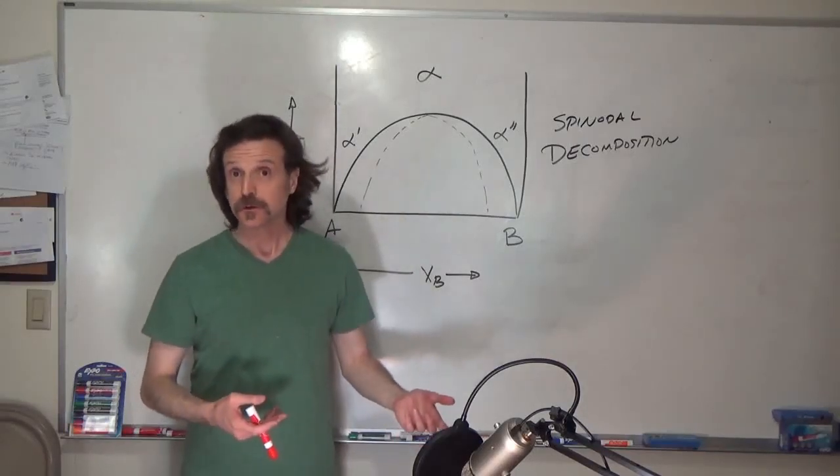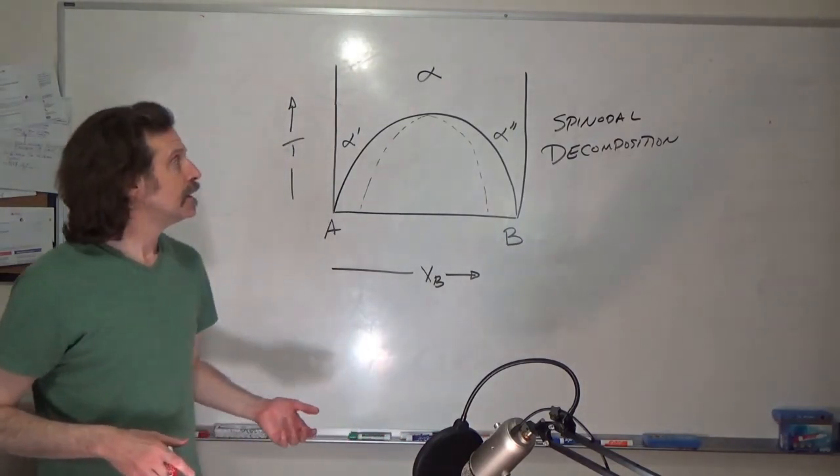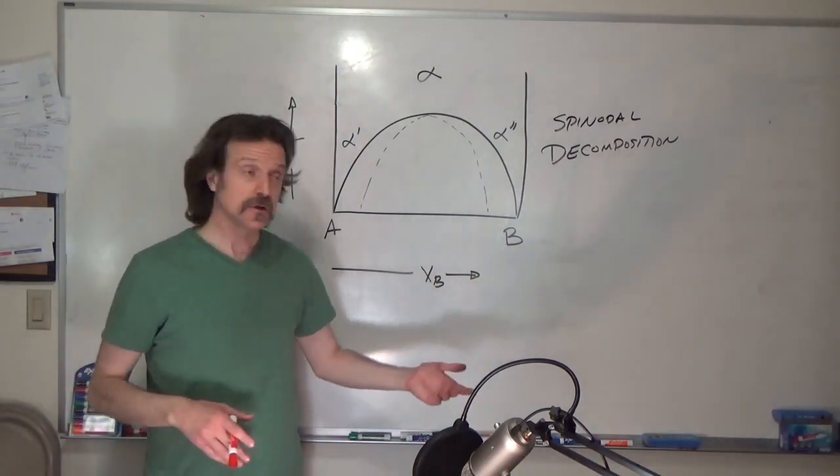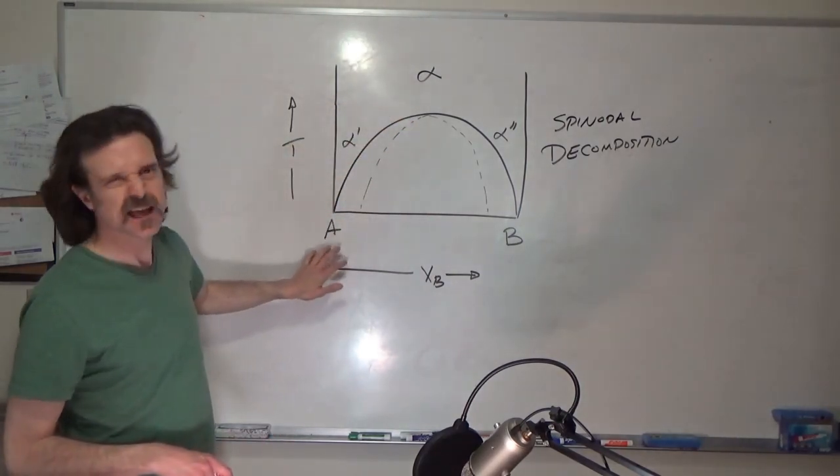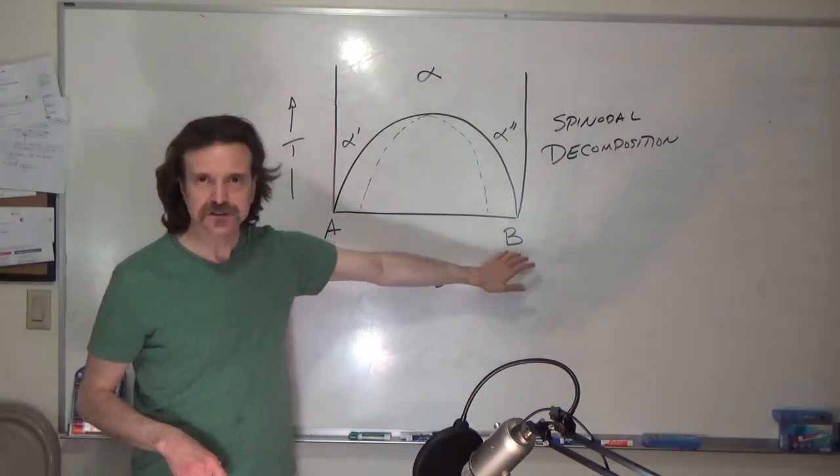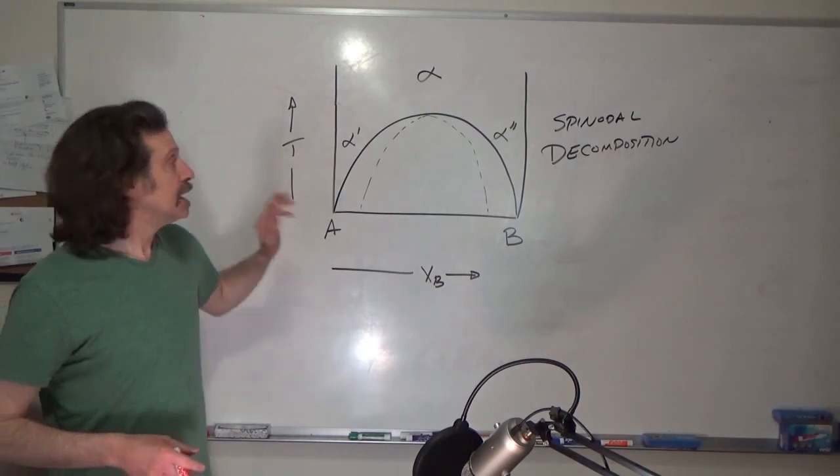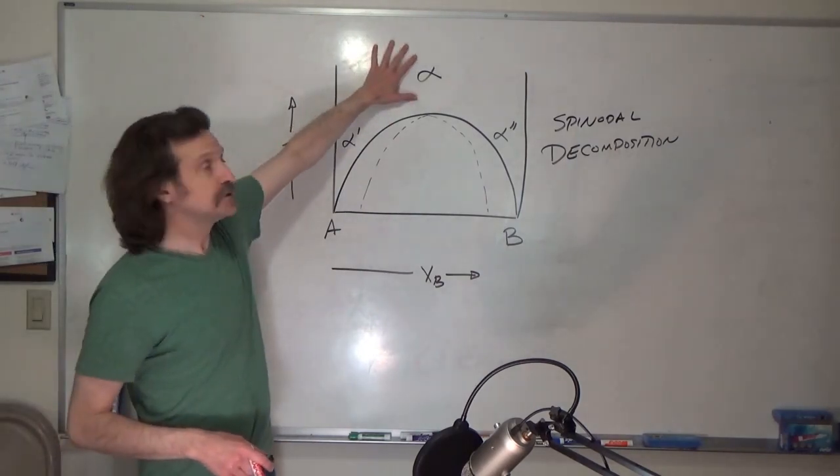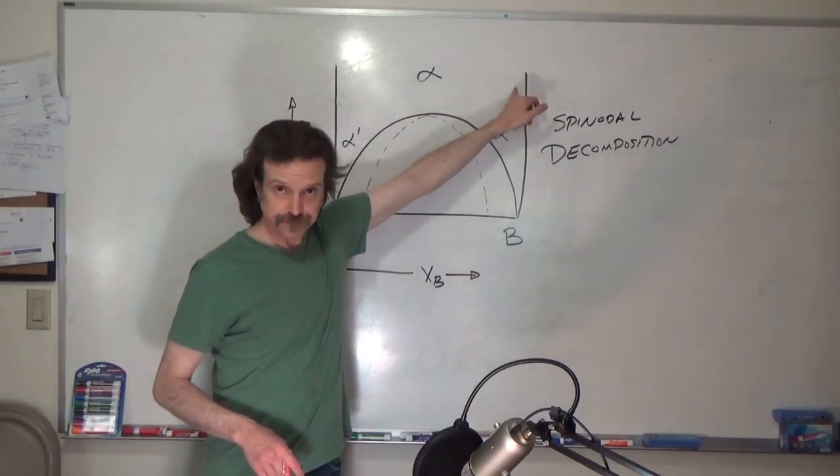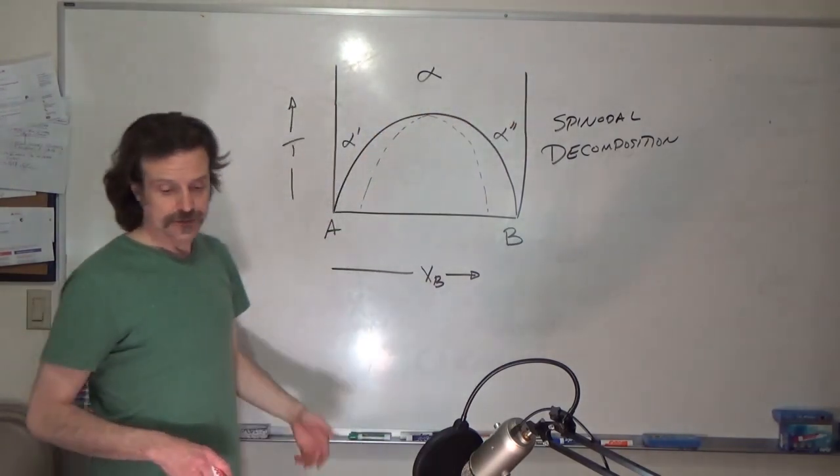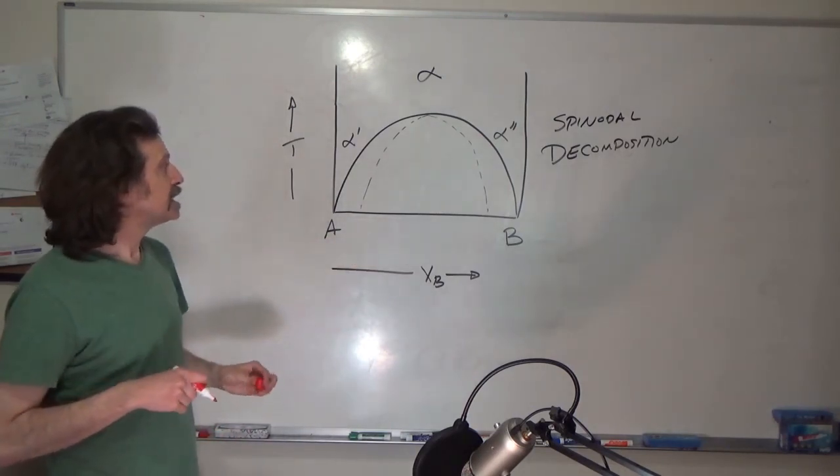I'd like to talk about spinodal decomposition. This is a situation in which—in this diagram I drew—I'm just having constituents A and B. There are many examples of this, but at high temperatures you have a single phase that's coherent across the entire compositional space. But at low temperature you get something that looks like this kind of dome shape.